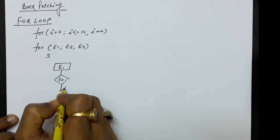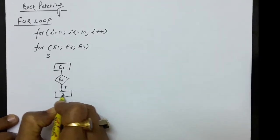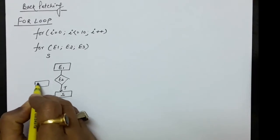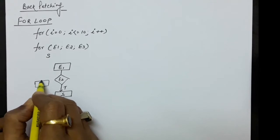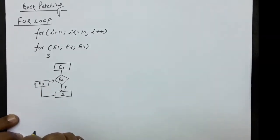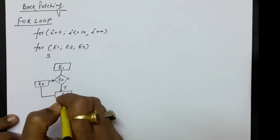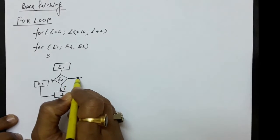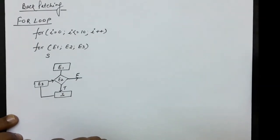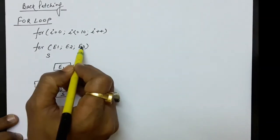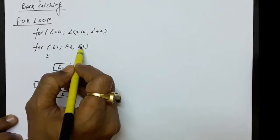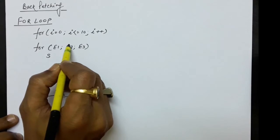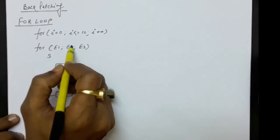If the condition is true, we execute statement S. After executing S, we do the increment or decrement part e3, and then go back to check the condition again. If the condition is true, we execute S again, then e3, then check the condition. If the condition is false, we come out of the loop.